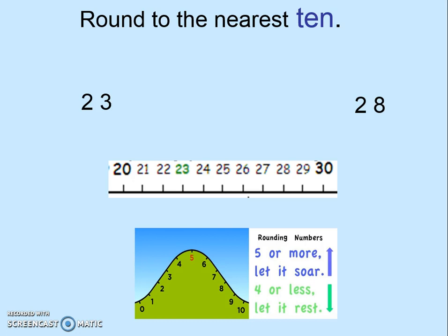As a rule, if the number in the ones place is 4 or less than 4, the number rounds down. If the number in the ones place is 5 or more than 5, the number rounds up to the next 10. Rounding is a very important concept, and you will use it in many of your math courses. You can use this rule of rounding to help you round any number to any given place value.